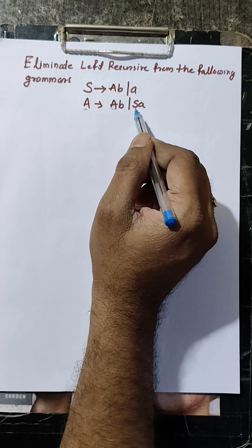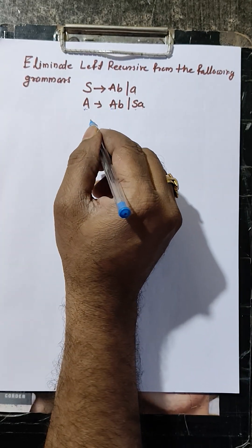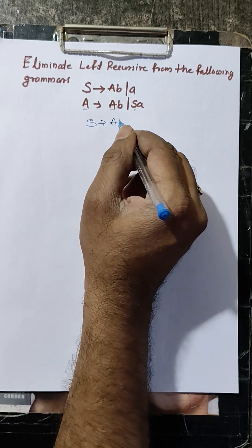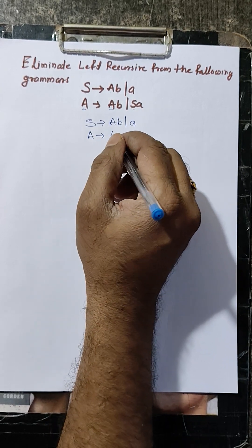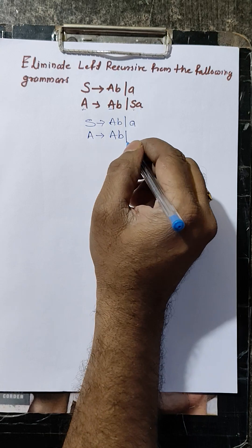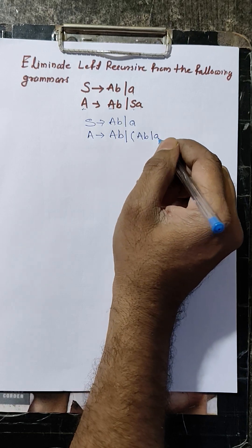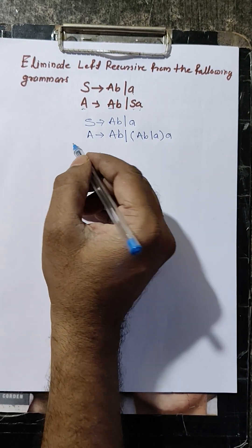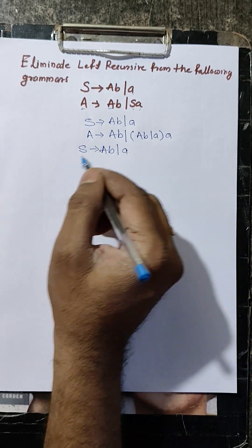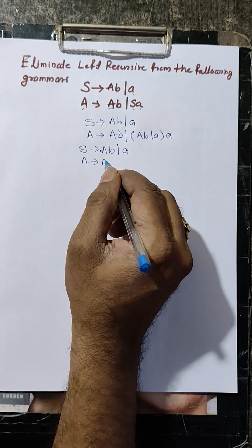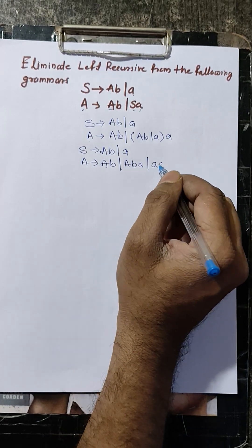Again, S produces a, a — you can replace this with the production of S. First, substitute: S produces a, b, a. Then A produces a, b or S replaced with production of S: S minus a, b, a or this here as it is. So S produces a, b or a, and this A produces a, b or a, b, a or a.